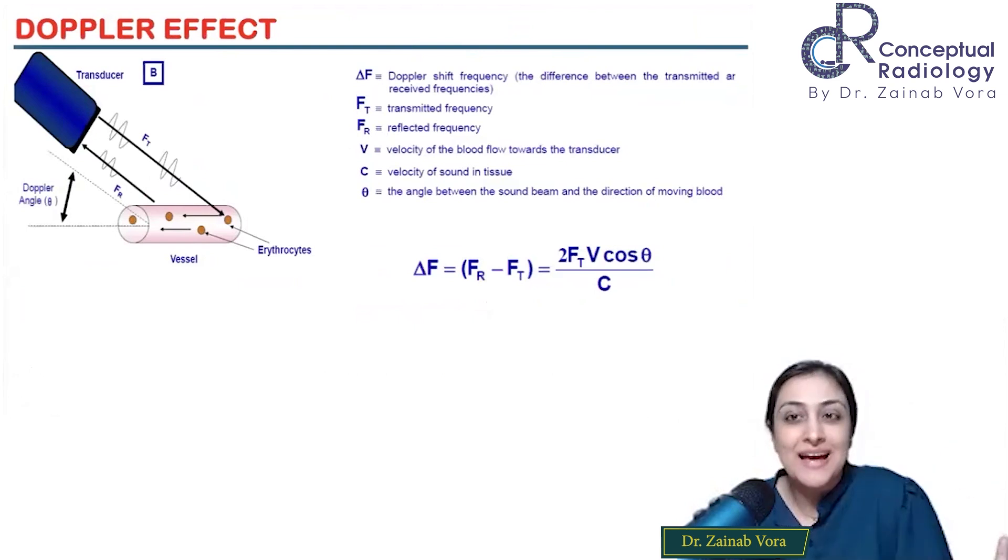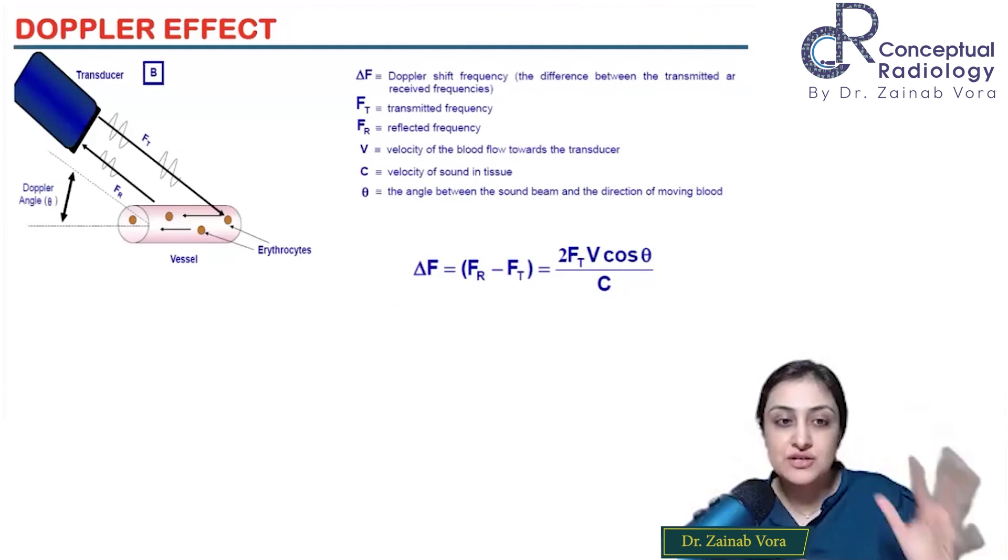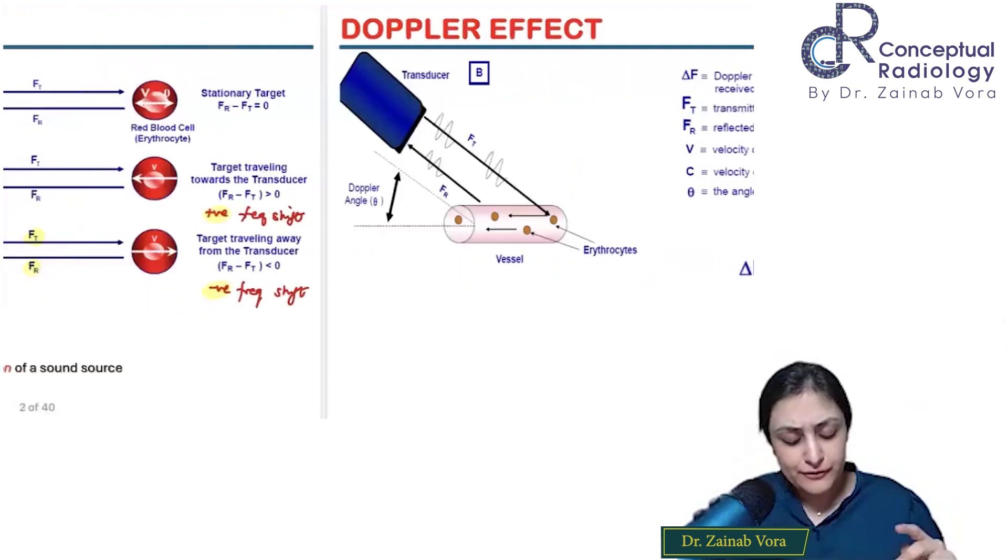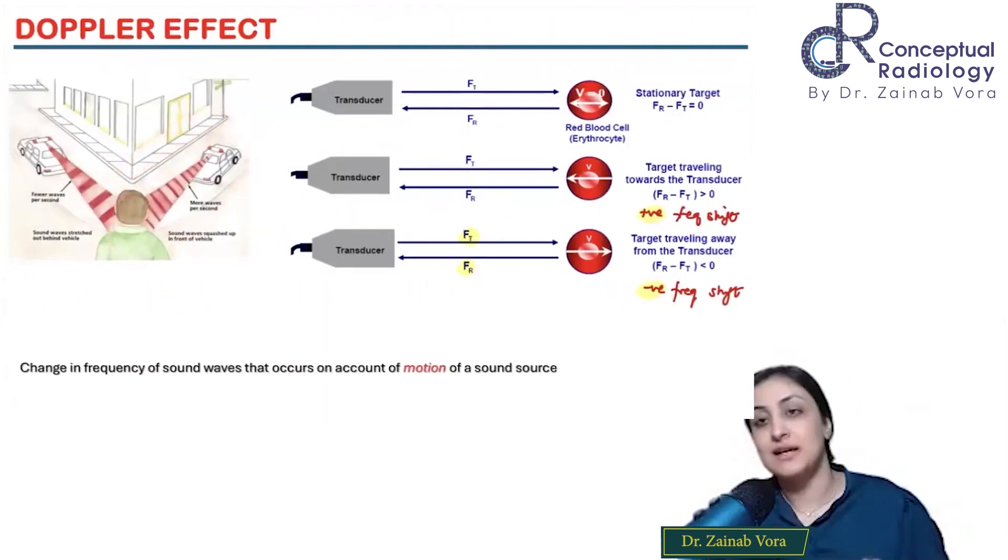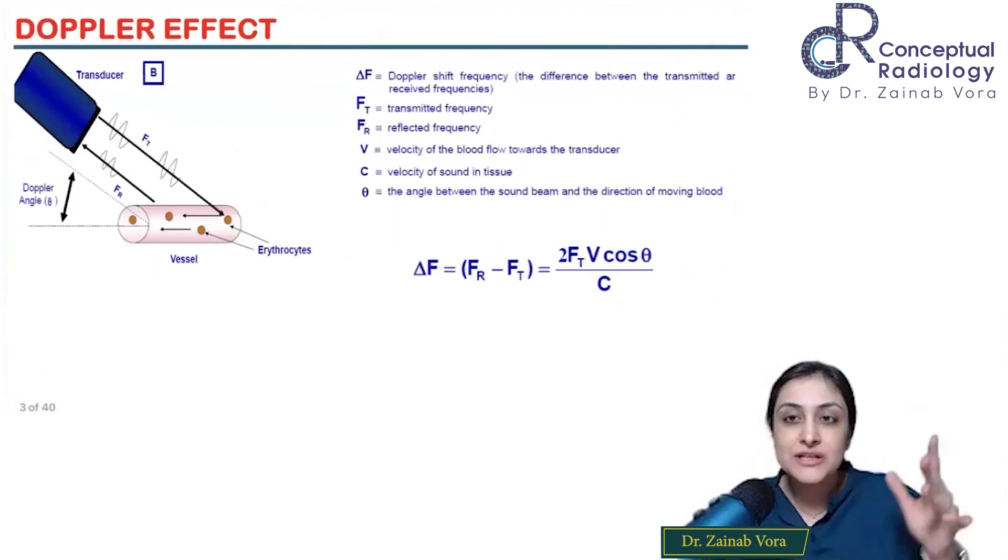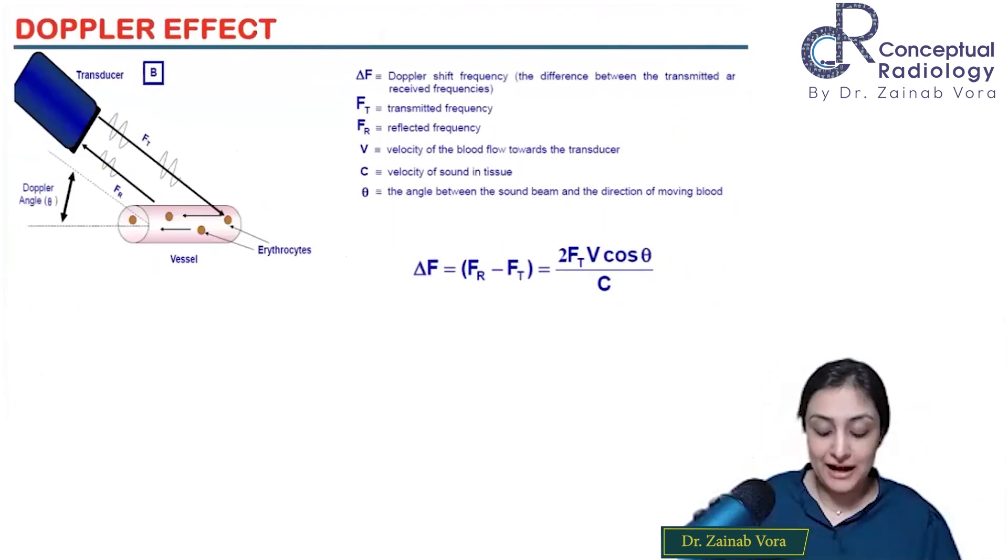This frequency shift tells us direction. Can it also tell me velocity? Yes, and that's very useful - it tells me velocity of blood flow. We already know our frequency shift, the difference between transmitted and reflected frequency. I also know the transmitted frequency. I want to know V - the velocity of blood. This is what's unknown.